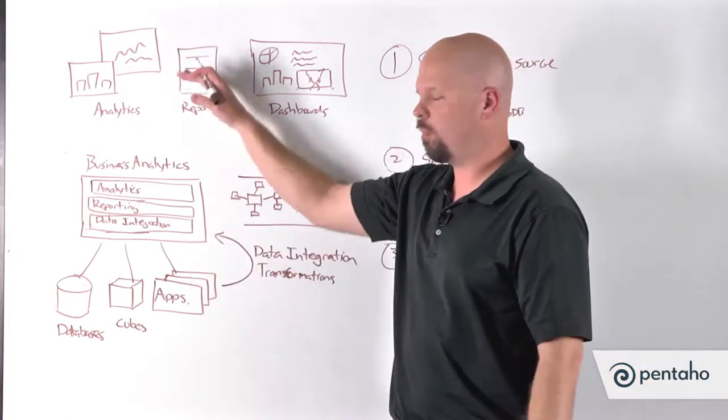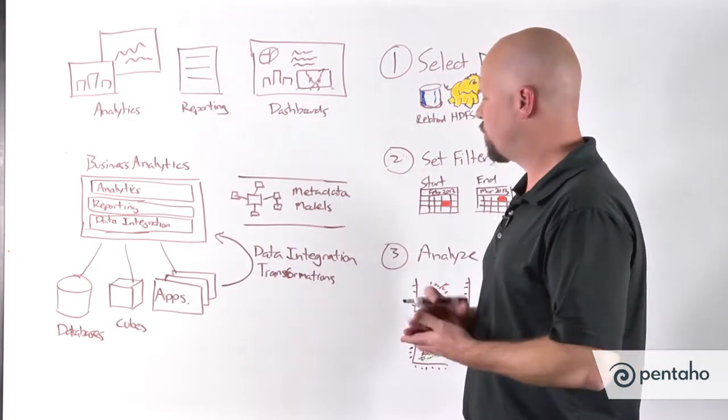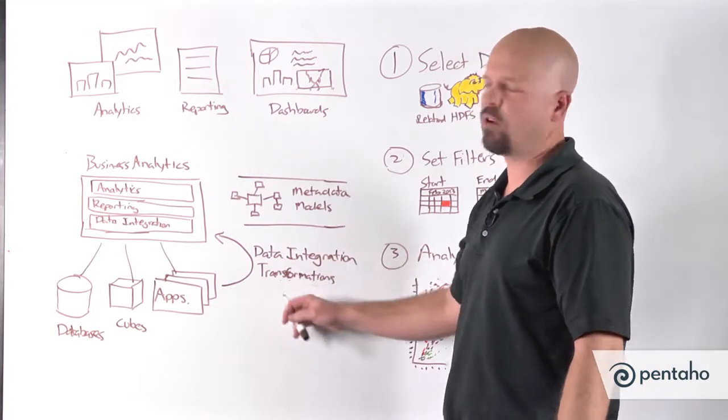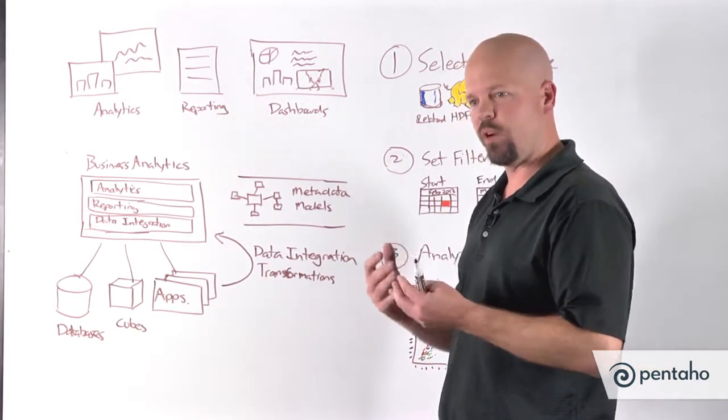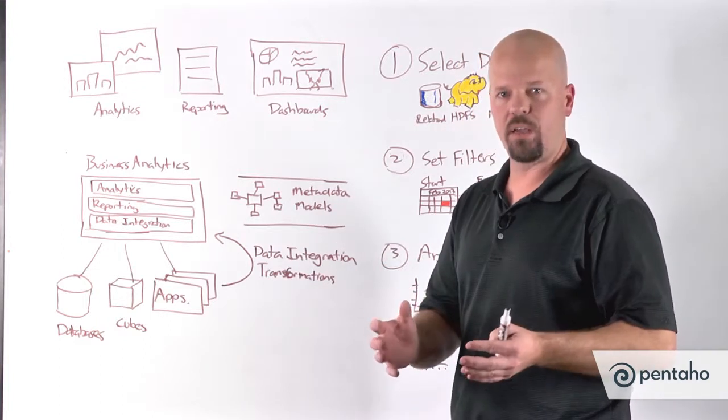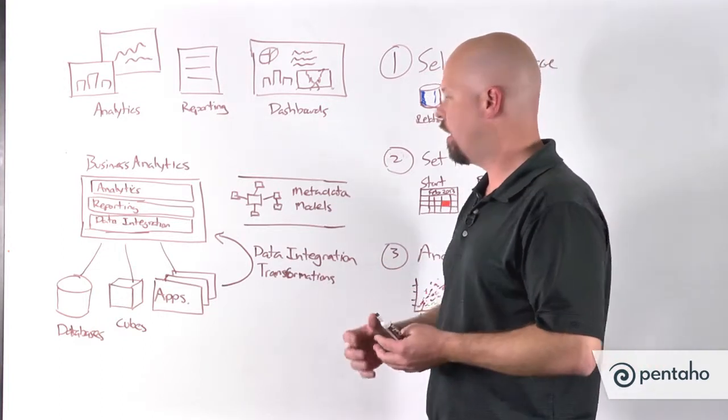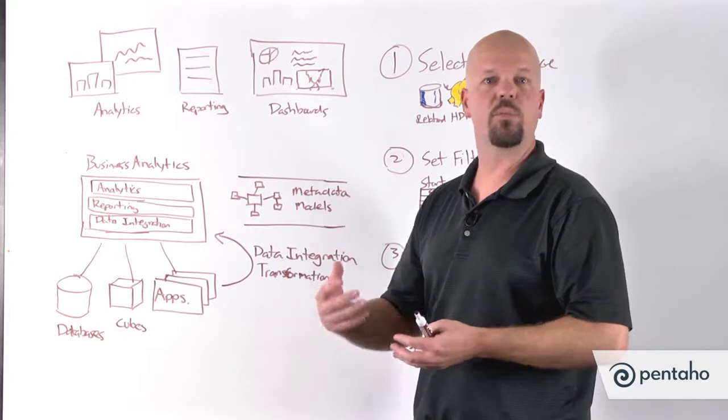So we introduced you to the Pentaho platform, so the steps that folks go through to build a ground up implementation would be you would typically start by authoring a series of data integration transformations, and this is where you'll go about connecting to your data, cleansing your data, enriching your data, again preparing it or staging it to be ready for analytics.